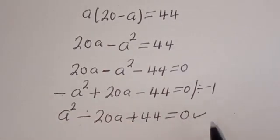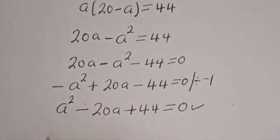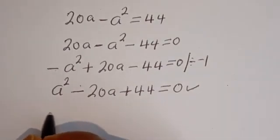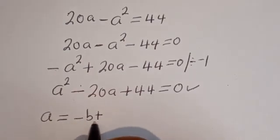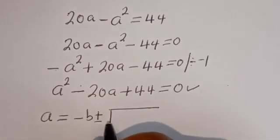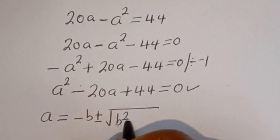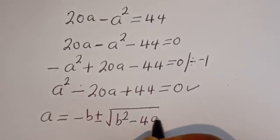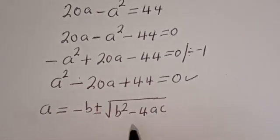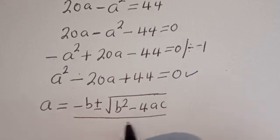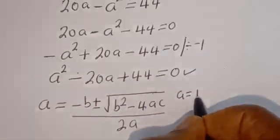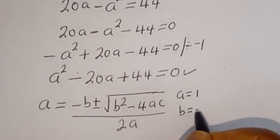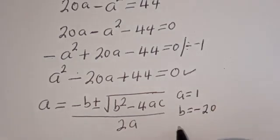This is a quadratic equation which can be solved using the quadratic general formula: A equals minus B plus or minus the square root of B squared minus 4AC, all divided by 2A. From the equation, the coefficient A equals 1, B equals minus 20, and C equals 44.